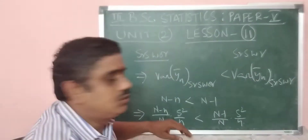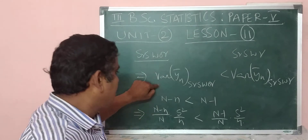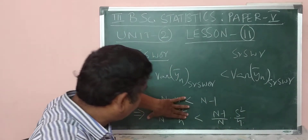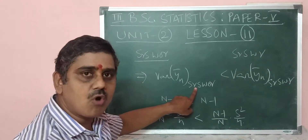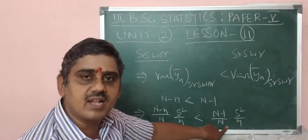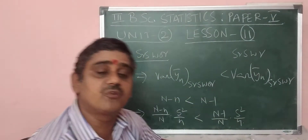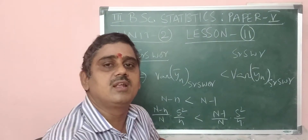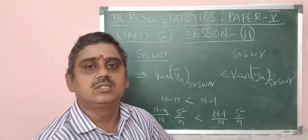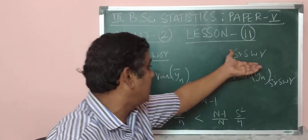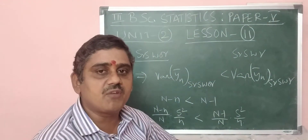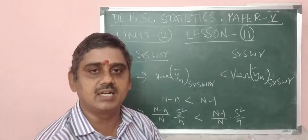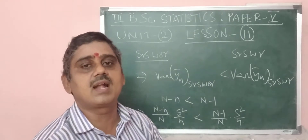So, variance of Y-bar in SRSWOR is always less than variance of Y-bar in SRSWR. Therefore, SRSWOR is more efficient than SRSWR. Simple random sampling without replacement is more efficient than simple random sampling with replacement.